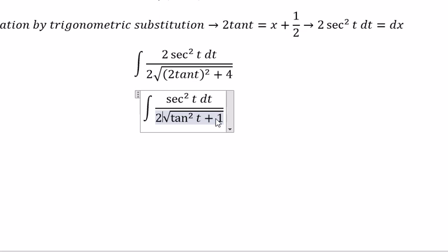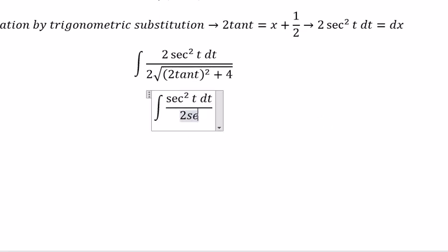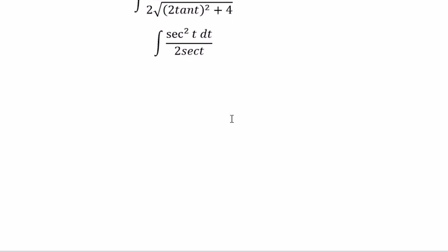This one we change into sec²(t). The square root of sec²(t), we get secant of t. Now, we just have 1/2 times the integral of secant of t dt.